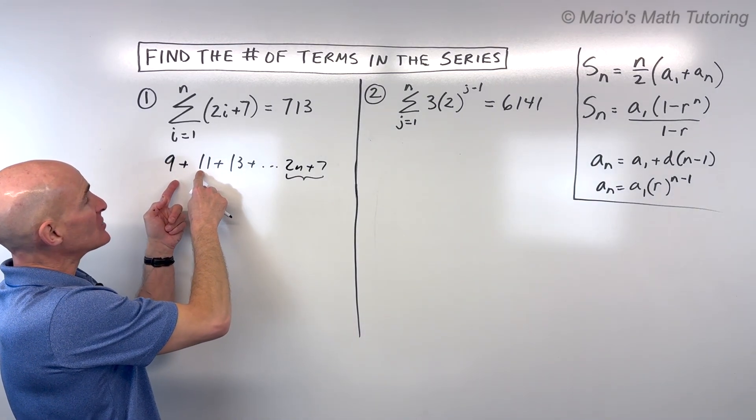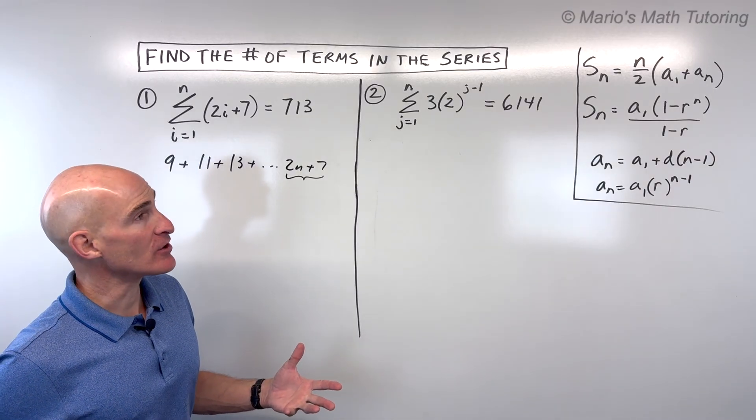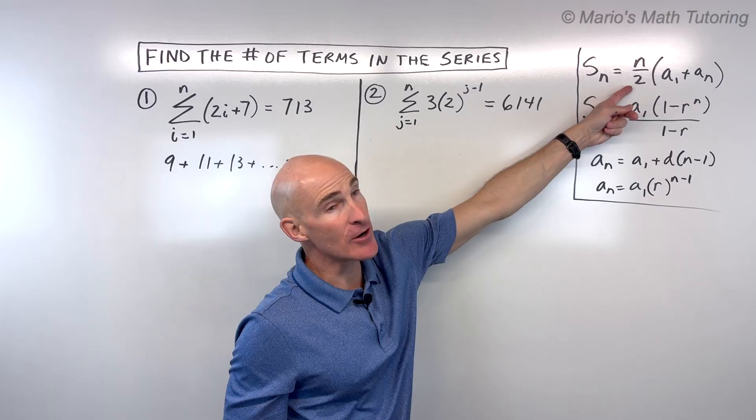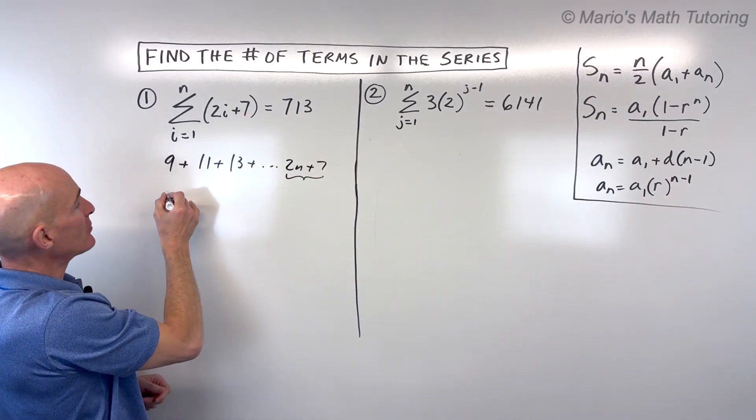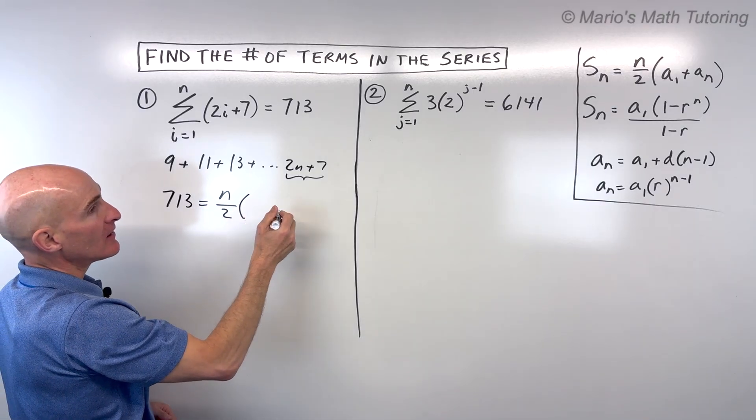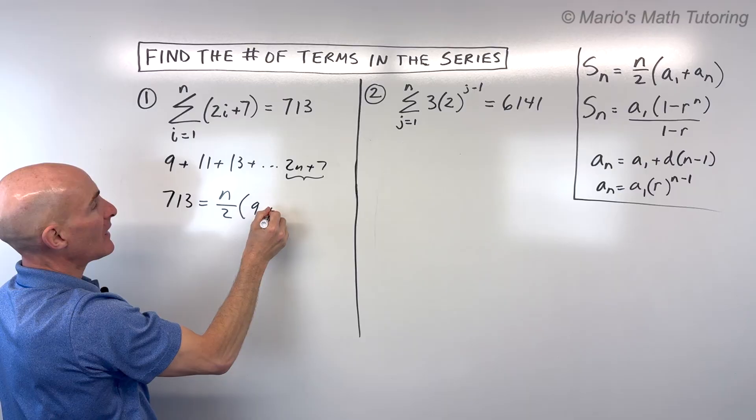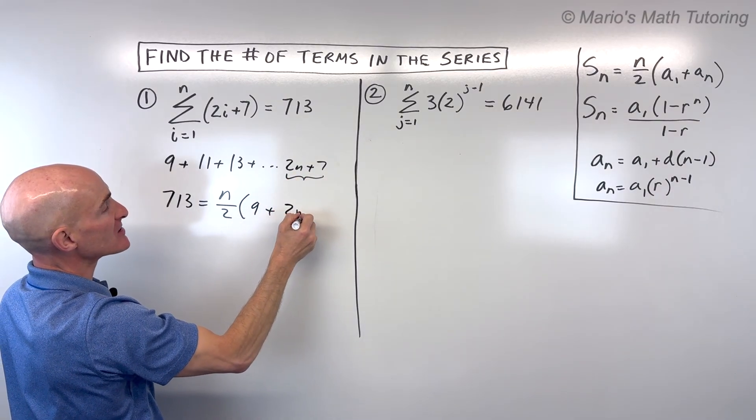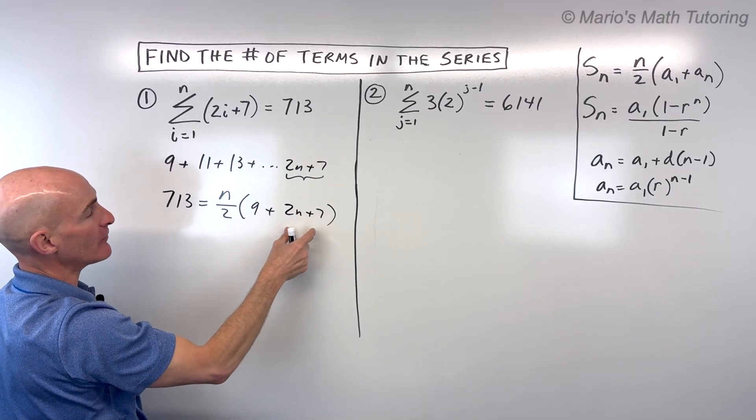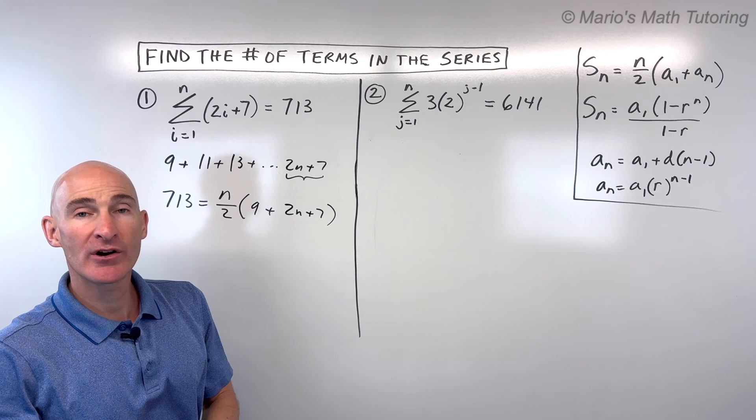So I can see here I'm adding 2 each time, which confirms that this is an arithmetic series, which means that we're going to be using this arithmetic sum formula right here. And so we're given the sum, which is 713. We don't know the number of terms that's n. a sub 1 represents our first term, which is 9. And then 2n plus 7 represents our last term. Now all we have to do is solve that equation for n and we'll know how many terms are in our series.